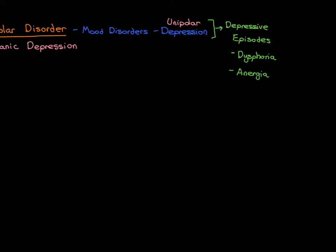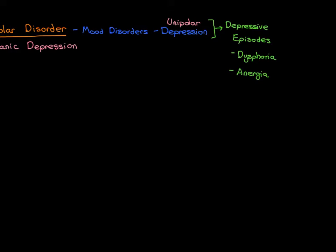How long does a depressive episode last? If you're suffering a little period of low mood and low energy that lasts a few days, that is not counted as a depressive episode. To be called a depressive episode it needs to have lasted at least two weeks. Depressive episodes generally last a few weeks by definition, but they can go on for months and even years.